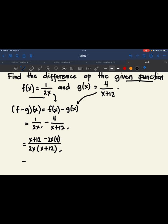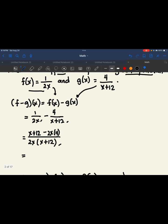So equals, we have x plus 12 minus 8x over 2x times x plus 12. Next,